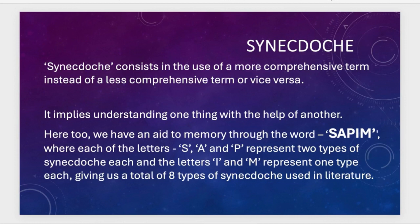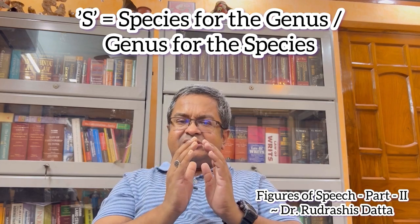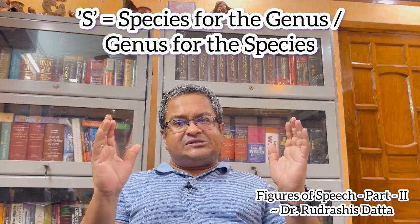Each of the letters S, A, and P in SAPIM represent two types of synecdoche each, while the letters I and M represent one type each — making a total of eight types or subdivisions of synecdoche commonly used in literature. The letter S indicates a substitution of species for the genus, or genus for the species.